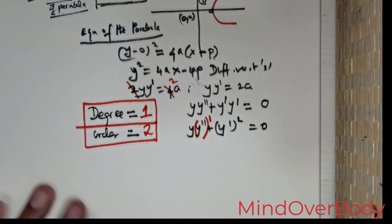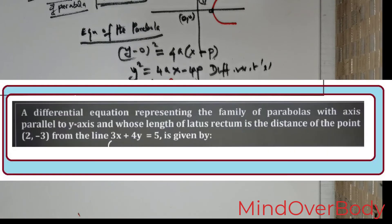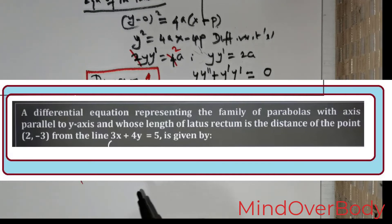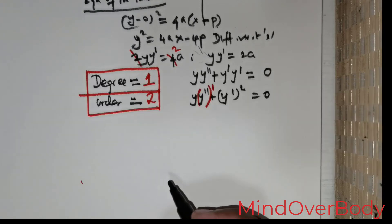We are expected to form the differential equation representing the family of parabolas with axis parallel to the y-axis, whose length of the latus rectum is the distance of the point (2, −3) from the line 3x + 4y = 5.